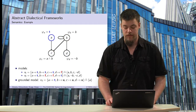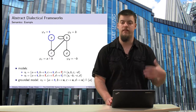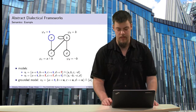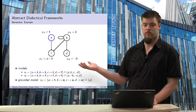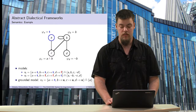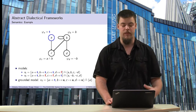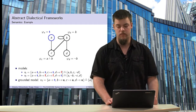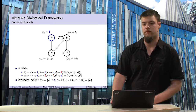The second model is where A and D are true and B and C are false. It still satisfies the acceptance conditions without violation. For the grounded model, we compute the least fixed point by starting with the empty set and applying the characteristic operator until we reach a fixed point. Starting from the empty set, the acceptance condition of A evaluates to true, so A is in the interpretation. But with only A known, it is not possible to decide whether B, C, or D should be acceptable. So the grounded model maps A to true and everything else to unknown.